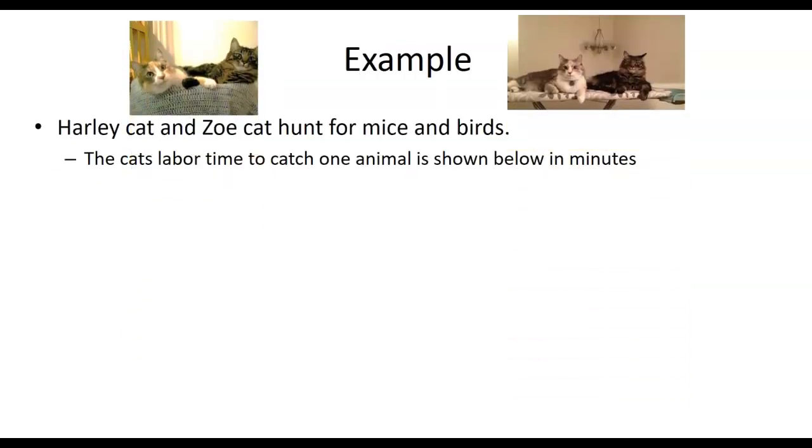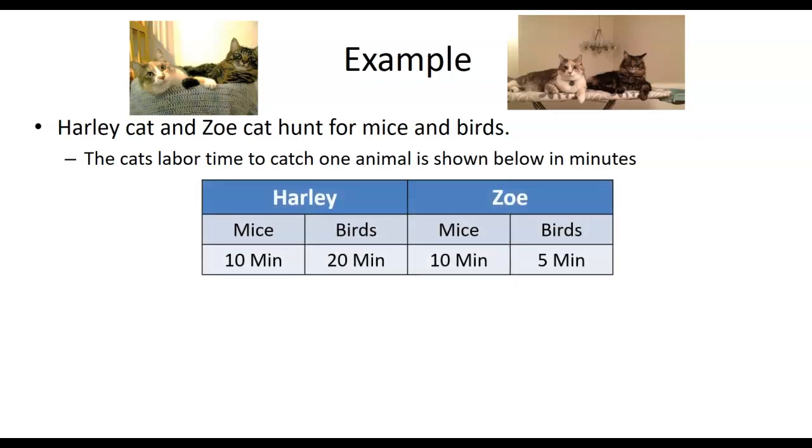So let's go through a little example. So I used to have two cats, Harley and Zoe. Harley is this one on the left, the calico, and we have Zoe over here. The cats, they have labor time for the animals below. They used to catch mice and birds. Harley can catch mice in 10 minutes, one mouse in 10 minutes, and one bird in 20 minutes. Zoe, she would take 10 minutes to catch one mouse or five minutes to catch one bird.